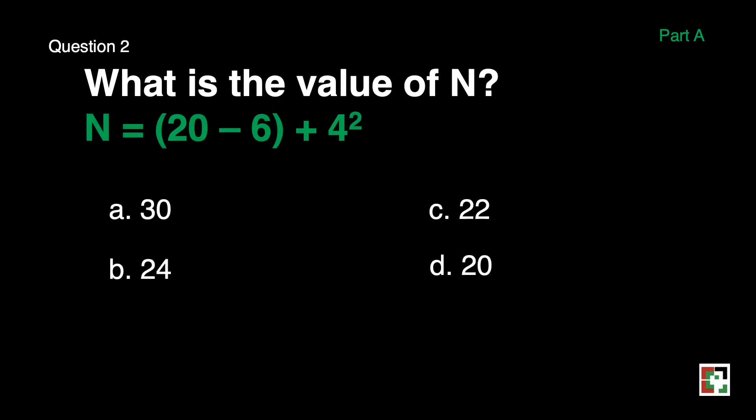Question number 2. What is the value of N in N is equal to the quantity 20 minus 6 plus 4 squared? A, 30, B, 24, C, 22, D, 20.